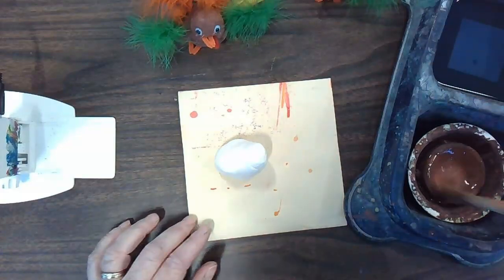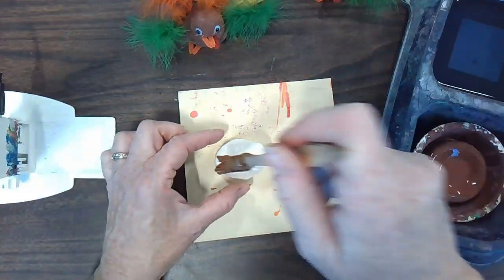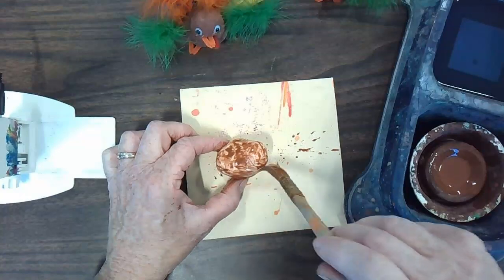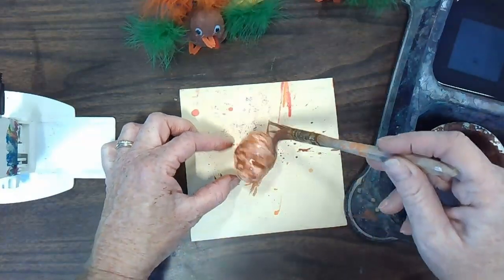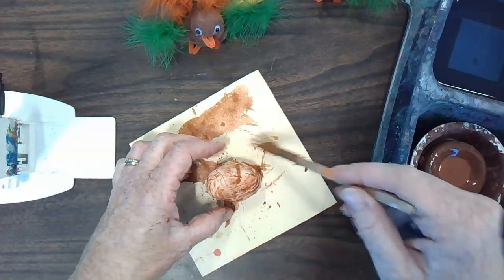We're going to have water on our brush and then swish it around and around on the paint. And then paint onto our turkey's body. We don't want to make it too wet. So you can wipe your brush onto the paper a little bit.